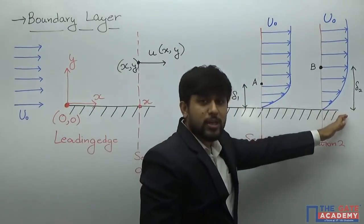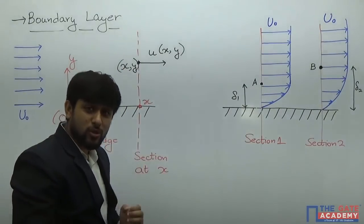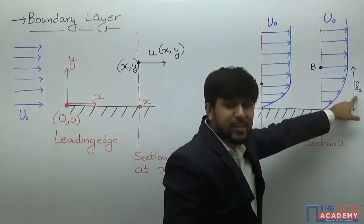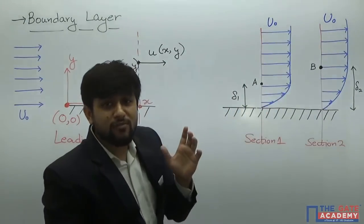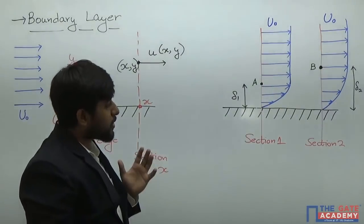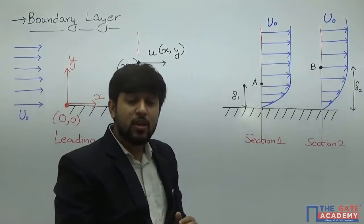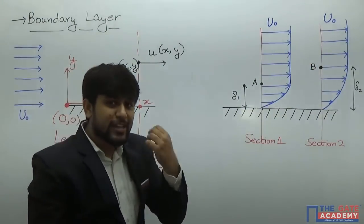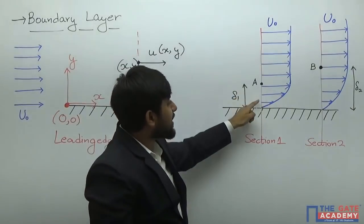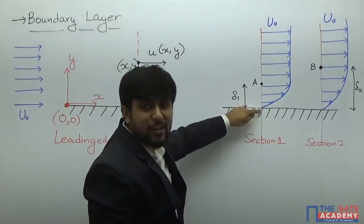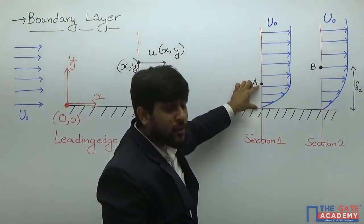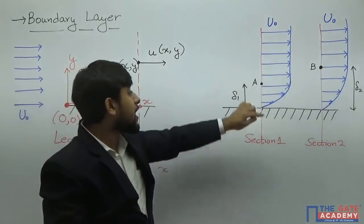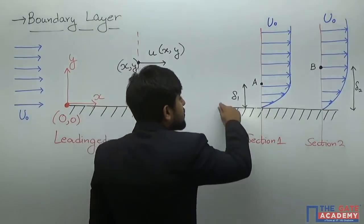Similarly for section two, in the layers of fluid near the solid surface the velocity is almost zero because of the no-slip condition, and as we move away from the plate the velocity increases. At a certain distance delta-two — point B — u(x,y) becomes almost equal to u-naught. We can take different sections and divide the whole plate into a very large number of sections, drawing a velocity profile for each. For each section we get some value of delta. If y is less than delta, the velocity is changing from zero to u-naught, so there is a velocity gradient. If y is greater than delta, all points have velocity u-naught and therefore there is no velocity gradient outside delta.